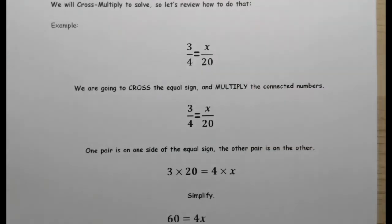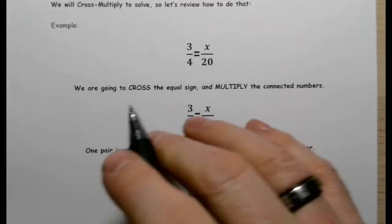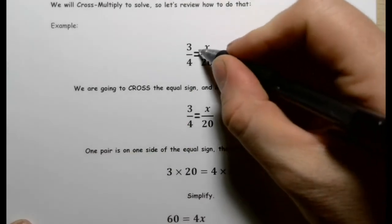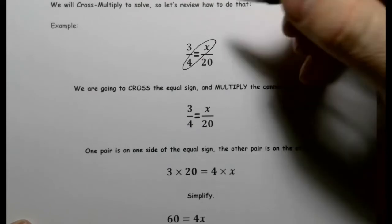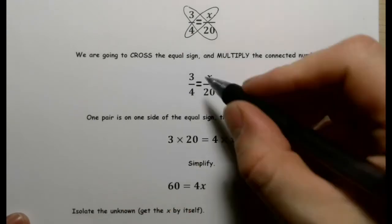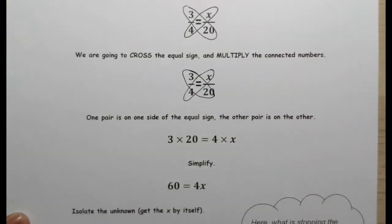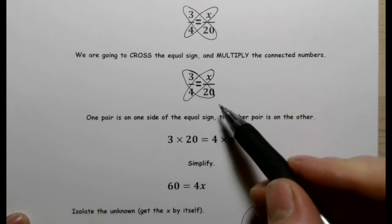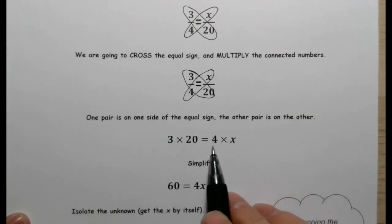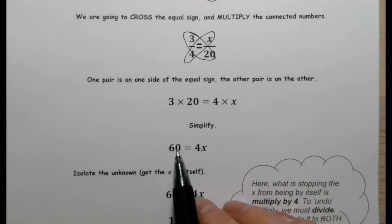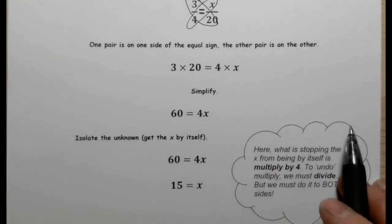Three times 20 equals four times x — that's one of the properties of these proportions: the equality holds true. So 60 equals 4x. I know that four multiplied by something equals 60. If I divide both sides by four, the fours cancel and I get x on one side. 60 divided by four is 15. So if three-quarters equals something over 20, that something must be 15. That's how we approach questions that deal with proportional reasoning.